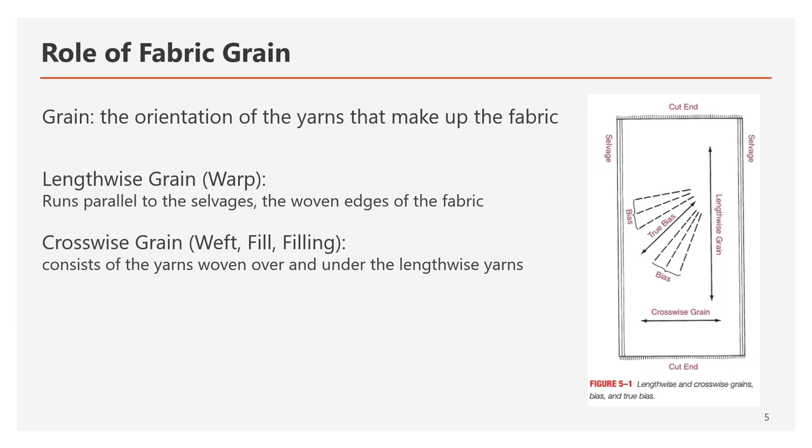On the other hand, knit fabric is more like a stretch fabric — it has one continuous yarn instead of two sets. So knit fabric doesn't technically have a grain, but most directional rules still apply for knit fabric as well. For this slide, you can think more in terms of woven fabric.